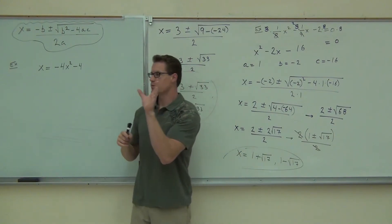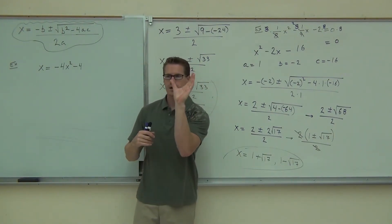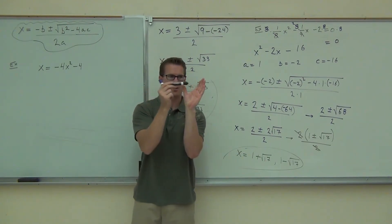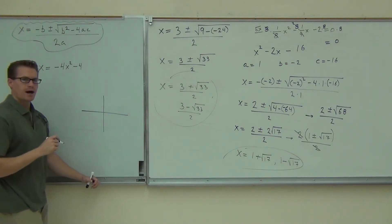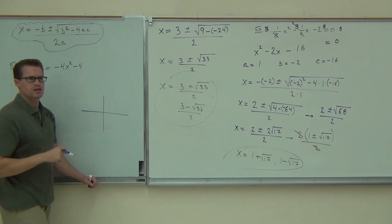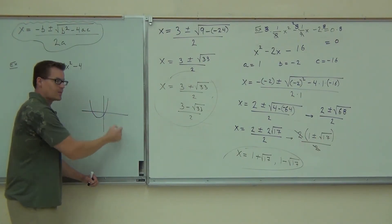What you're doing when you're finding this, when you're finding these two solutions, you're finding out where that graph crosses the x-axis. Where that graph crosses the x-axis. So, the options you have are, how many spots are you normally going to cross the x-axis at with a parabola? Well, if you go down, you have to come up somewhere, right?